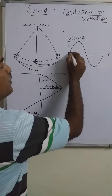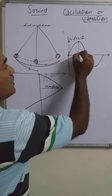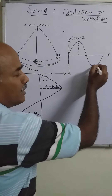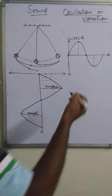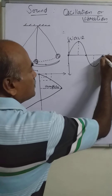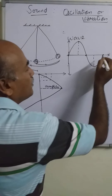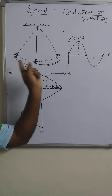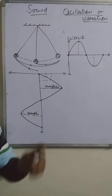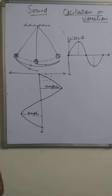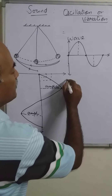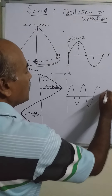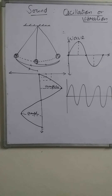From the mean position, the particle reaches the extreme position — that is the amplitude — then comes back to mean position, goes in the opposite direction to the opposite extreme, and returns to mean position, completing one oscillation. If the particle oscillates continuously, the graph keeps going and any number of waves can be made.